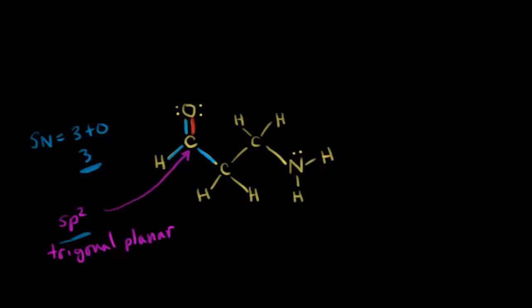Let's do the next carbon. I see only single bonds around that carbon, so it must be sp3 hybridized with tetrahedral geometry. The same applies to the following carbon — only single bonds around it, only sigma bonds — so it's also sp3 hybridized with tetrahedral geometry.